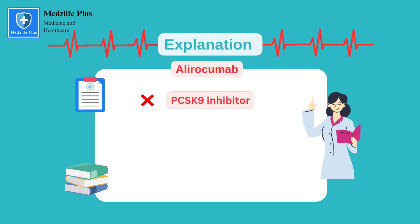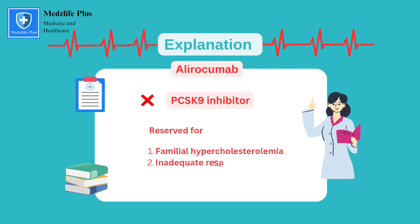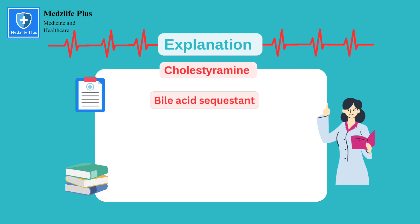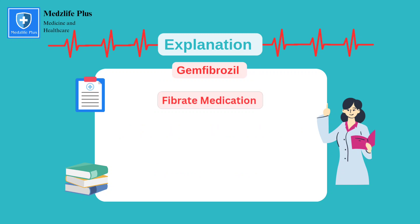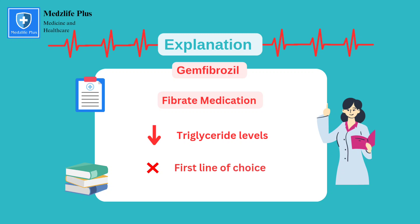Alirocumab is a PCSK9 inhibitor, which is effective in lowering LDL cholesterol levels but is typically reserved for specific cases such as patients with familial hypercholesterolemia or inadequate response to other therapies. Cholestyramine is a bile acid sequestrant which can lower LDL cholesterol by binding to bile acids in the intestine, but it is not the first-line choice in this patient with hypertension and diabetes. Gemfibrozil is a fibrate medication primarily used to lower triglyceride levels and is not the first-choice medication class for targeting LDL cholesterol reduction in this patient.